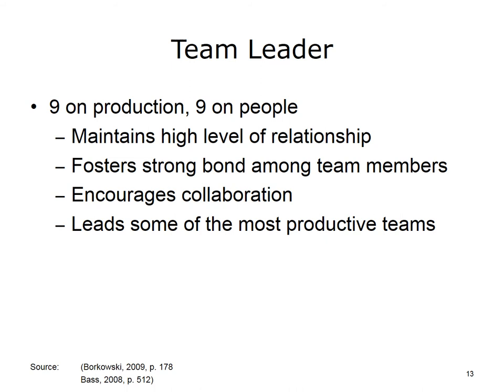The team leader type is represented by a 9 on production and a 9 on people. This is a very high task-oriented leader who is also very focused on maintaining a high level of relationships. This type of person leads with a sense of purpose, creating a perfect infusion of concern for people and concern for task. Team leaders work to accomplish interdependence through a common stake in the organization, which builds relationships of trust and respect among followers. It is expected that followers will internalize goals and objectives, which will increase productivity and quality.